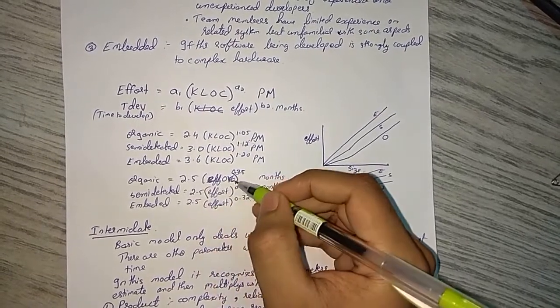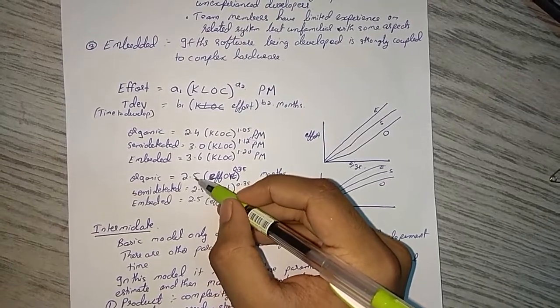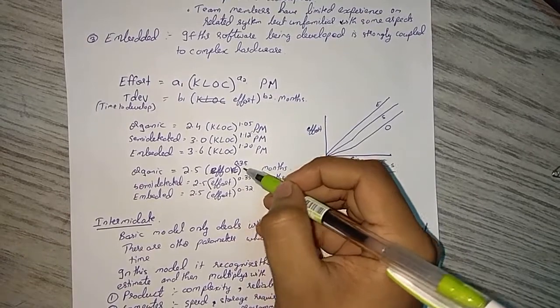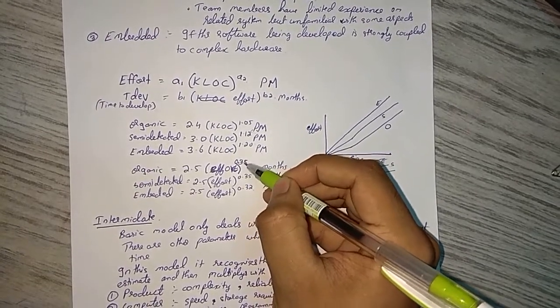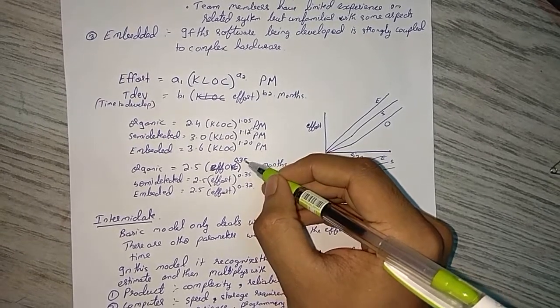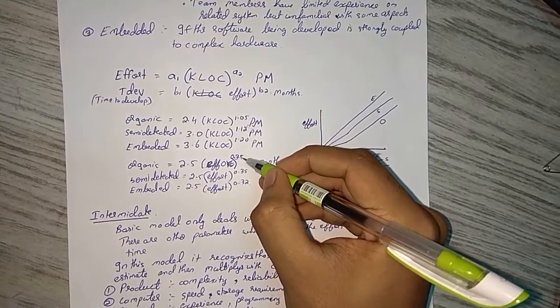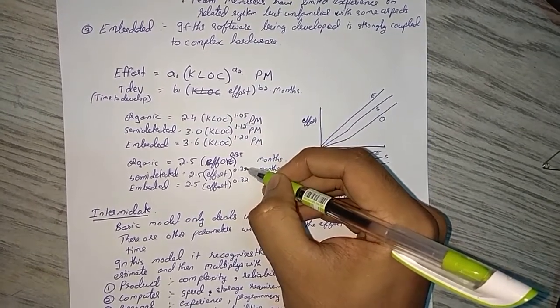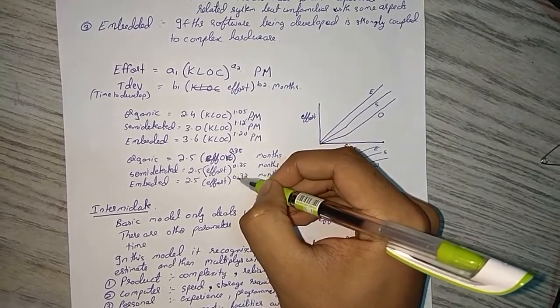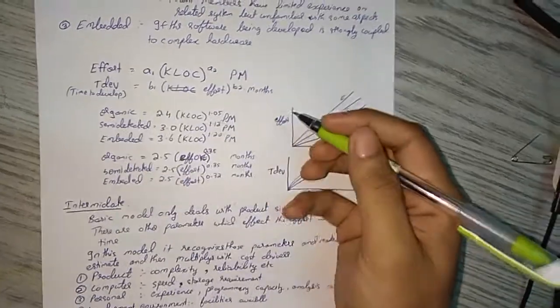Next, organic. In organic we have time for development. For organic is 2.5, here b1 is always 2.5 that you have to note it, times effort raised to 0.38. 0.38 means if it is the value of b2, then next time it will be minus 0.03, that means 0.35, then minus 0.03, that will be 0.32. That will be calculated in months.